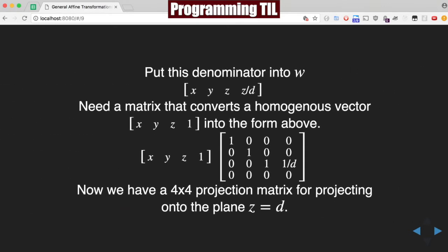So we can put this into our W for a 4x4. So we have x, y, z, and then z over d. And now we need to come up with a matrix that converts the homogenous vector [x y z 1] into the form above, right here, x, y, z with z over d. And that's what this matrix right here is. So it looks like an identity matrix for the last row and, of course, the last column, which is the 1 over d. And that would be the formula you need to have a projection matrix for projecting onto the plane z equals d.